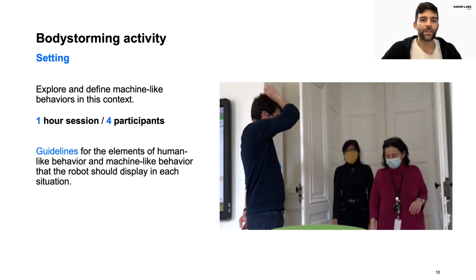For example, participants prefer to have the robot in a visible position rather than queuing behind them. Finally, we body-stormed alternative behaviors which we consider as input to define a machine-like approach. This activity provided us with guidelines for human behavior and machine-like behavior elements that the robot should display.